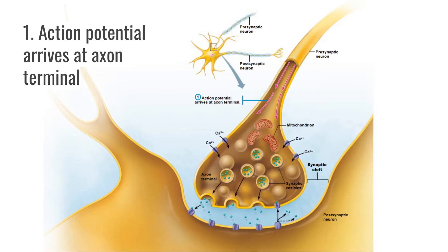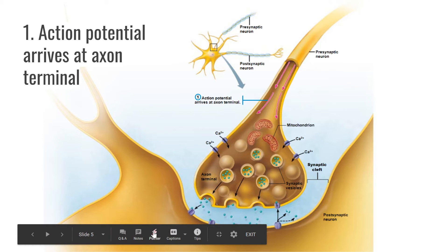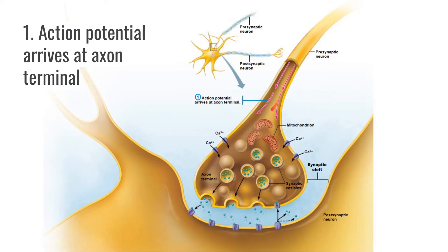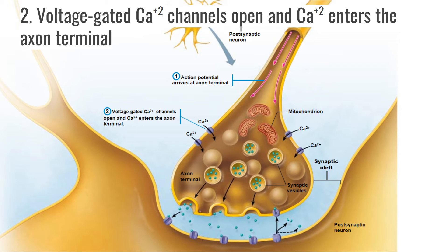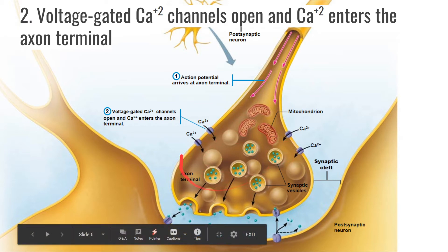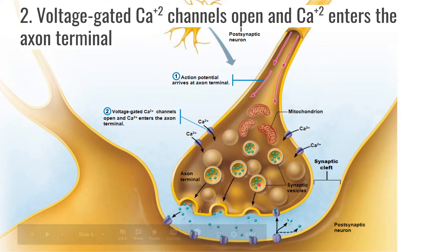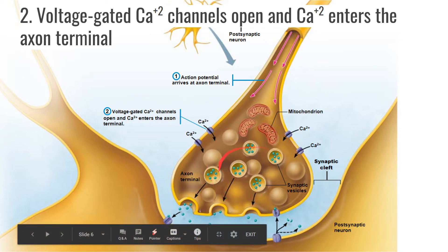Just like the neuromuscular junction, everything starts when the action potential arrives at the axon terminal — the brain sends a signal that travels through our nerves. When the action potential reaches the axon terminal, it causes voltage-gated calcium channels to open, allowing calcium to flow down its concentration gradient and enter the neuron. Calcium is positive, so when a bunch of positive calcium ions enter, it causes depolarization, making the inside positive.